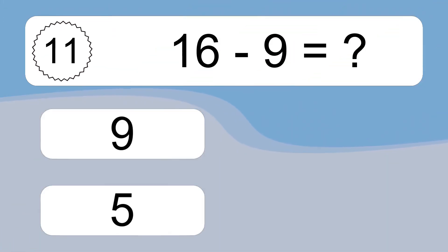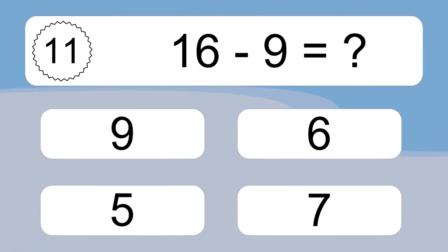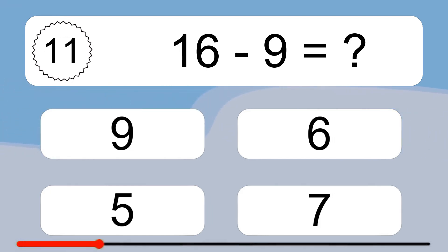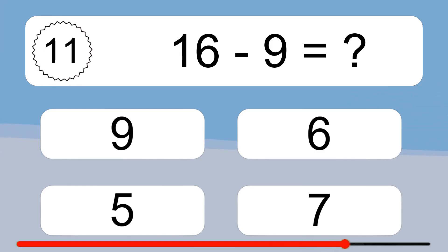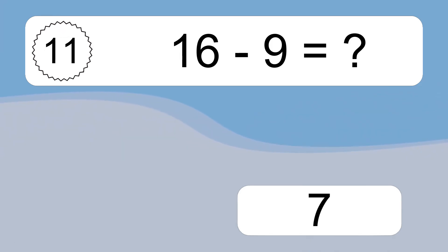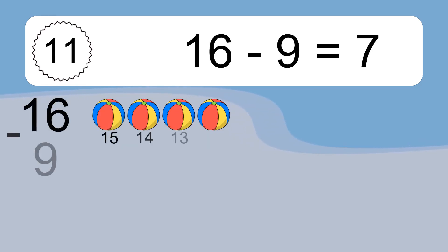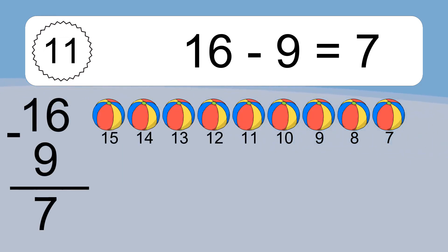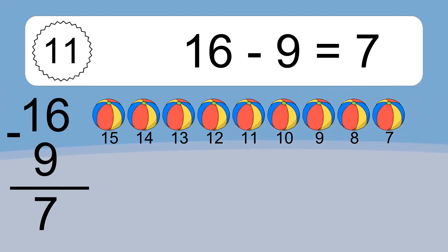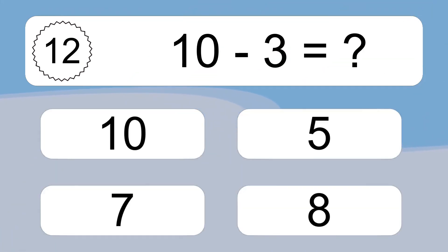16 minus 9 equals what? 16 minus 9 equals 7. Let's count it: 15, 14, 13, 12, 11, 10, 9, 8, 7.